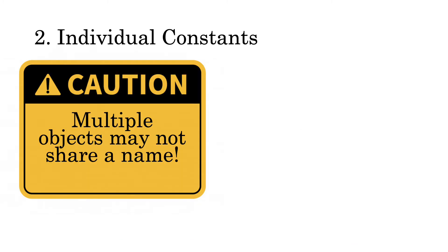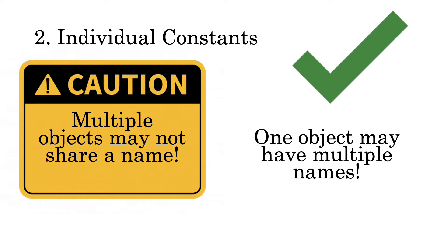So, the proceeding shows why multiple objects may not share a name. However, the converse is not true. In other words, one object may have multiple names. Let me give you an example.